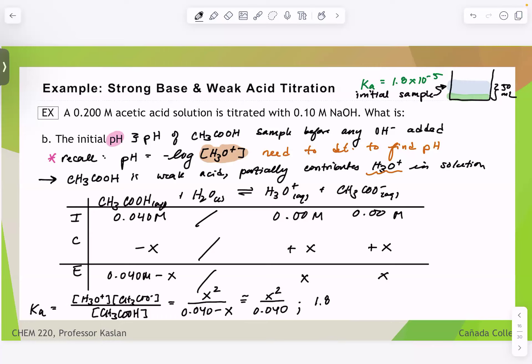So now I have my Ka, 1.8 times 10 to the negative 5 is equal to X squared over 0.040 or X squared is equal to the product of my Ka and 0.040. So let's figure out what that is, 0.04 times 1.8 times 10 to the negative 5. This gives me 7.2 times 10 to the negative 7 molar squared, which means that X is the square root of that, which I get as 8.485 times 10 to the negative 4 molar.